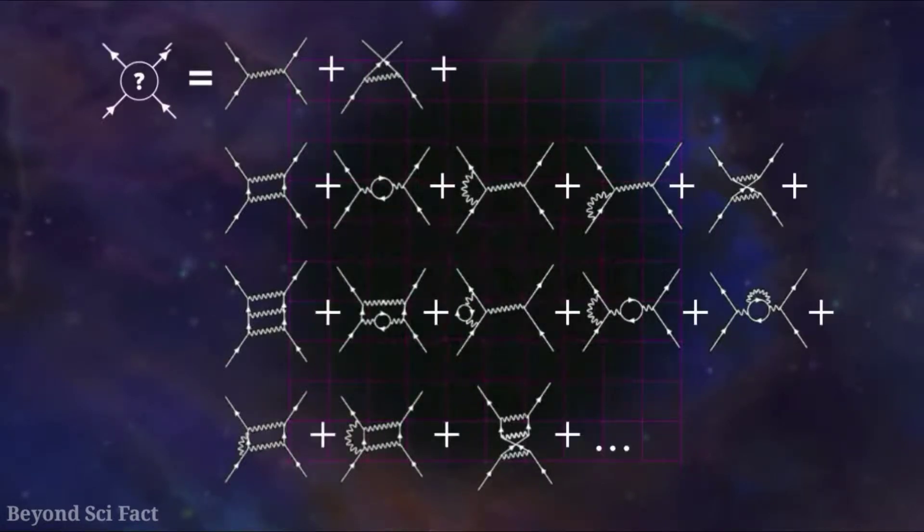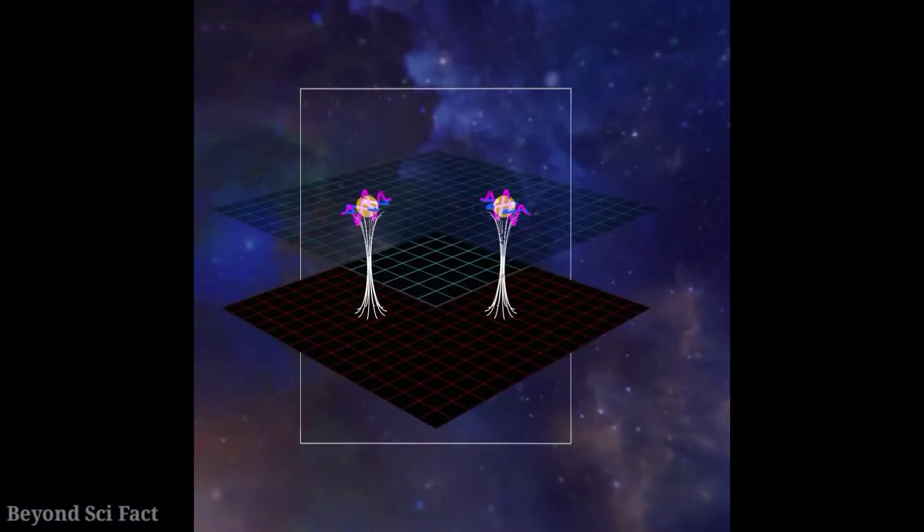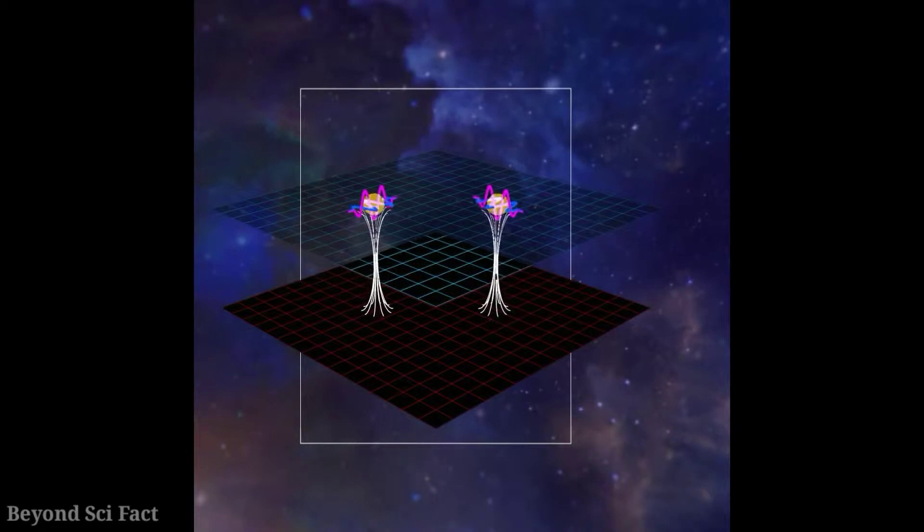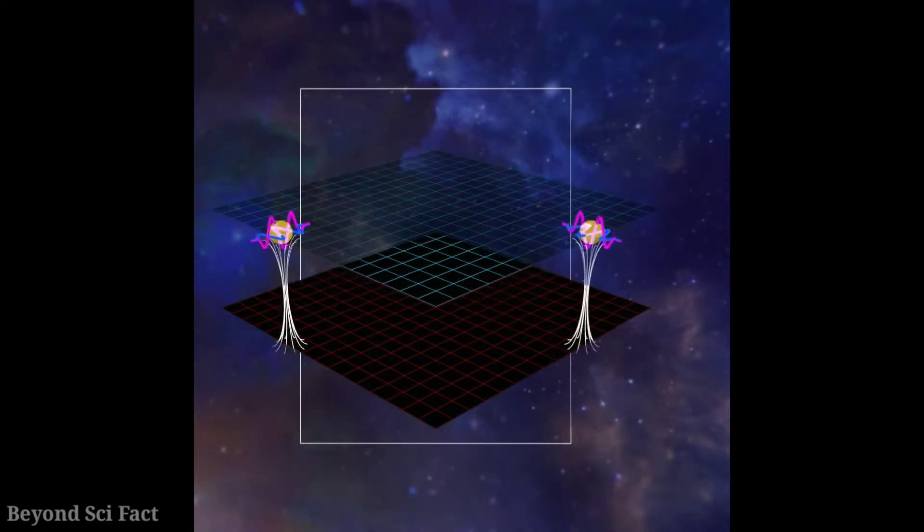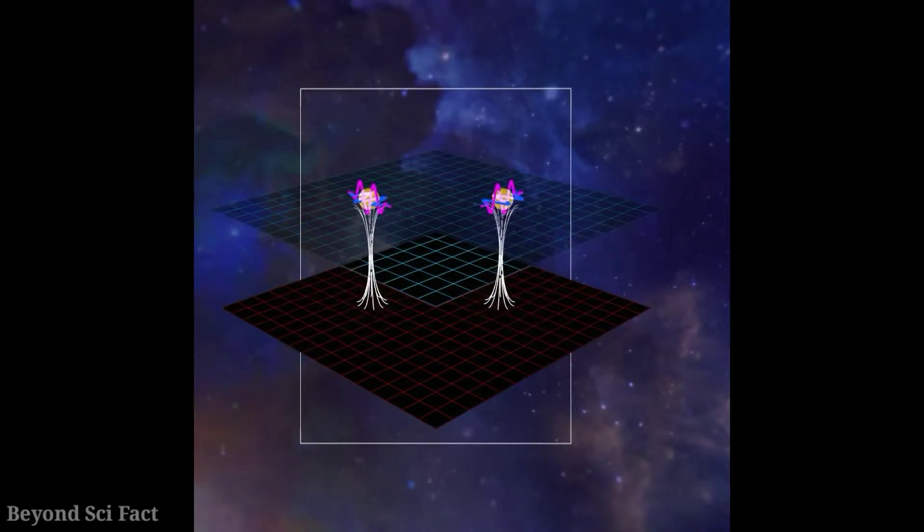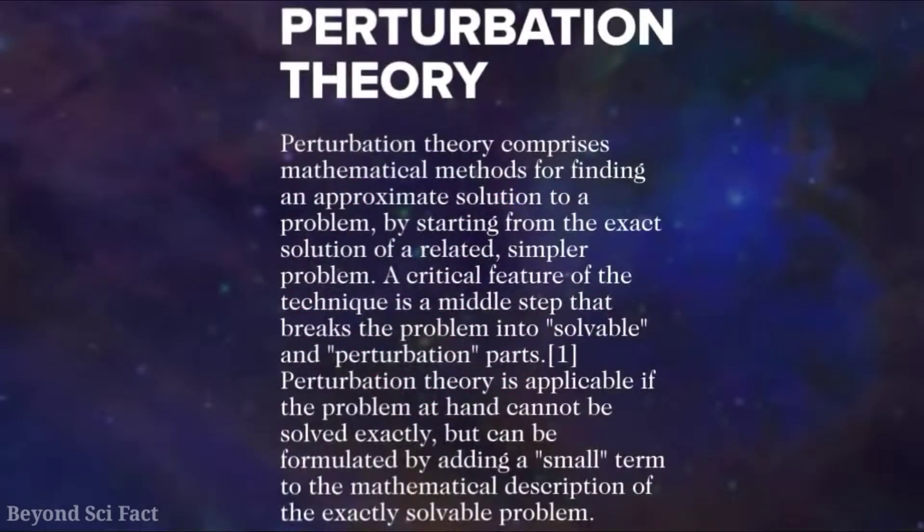Let us understand this with our electron example. We can see that whenever the electron is interacting with the electromagnetic field, it is transferring energy, momentum, and single packet of photon, which we call a virtual photon. Similarly, these interactions are very often, and are different in different fields, and each interaction transfers a particle, virtual particle.